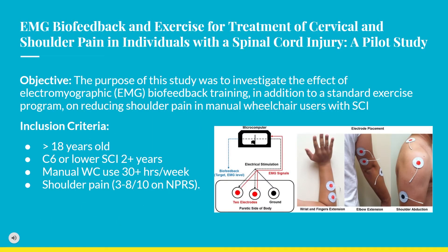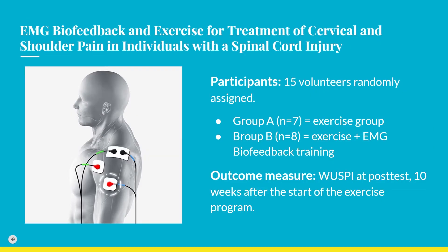The second study investigated the effect of EMG biofeedback training in addition to a standard exercise program to reduce shoulder pain in manual wheelchair users with SCI. Inclusion criteria included being 18 or older, living in the community, having an SCI of C6 or lower for two or more years, using a manual wheelchair 30 hours per week or more, and having musculoskeletal shoulder pain rated 3 to 8 out of 10 on the NPRS experienced during or increased by daily activities. Participants were 15 volunteers from the Medical University of South Carolina or the Charleston VA Medical Center.